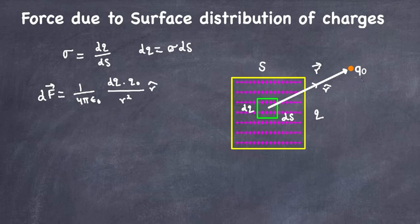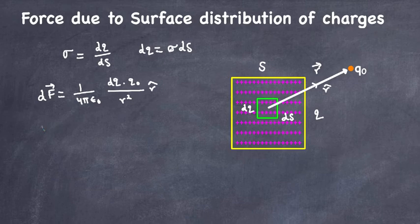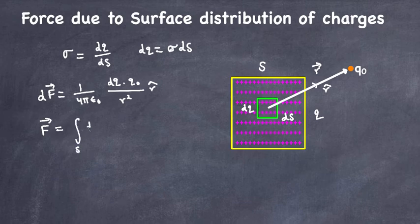We are trying to find the total force on charge q₀ due to the whole surface S. To do that, we integrate dF over the entire surface, so F = ∫_S dF, which equals the integral over S of (1 / 4πε₀) · (dQ · q₀ / r²) · r-hat.